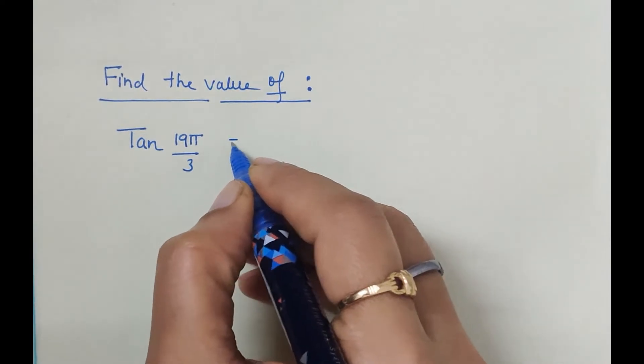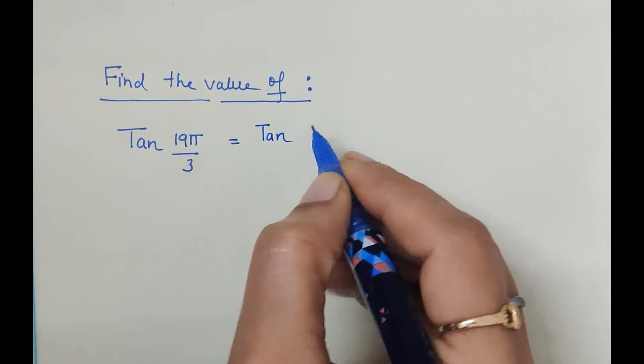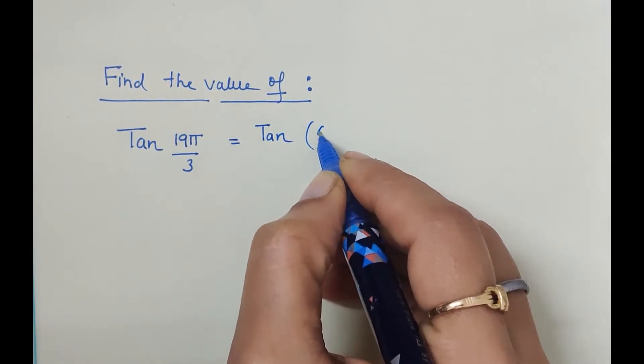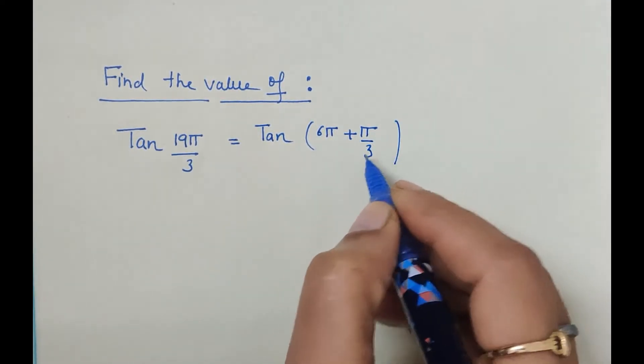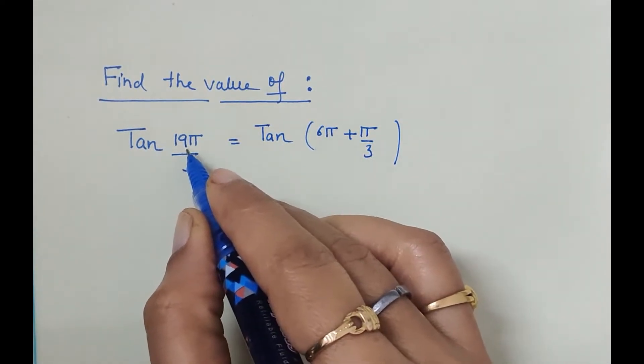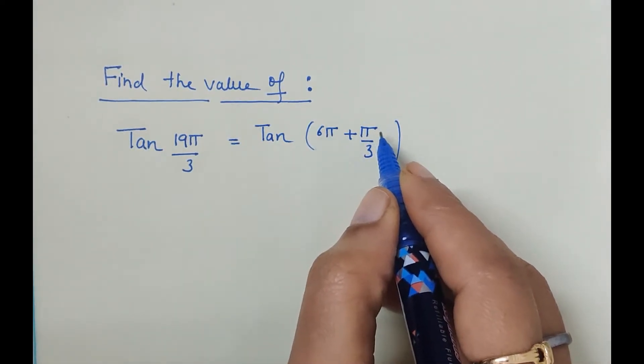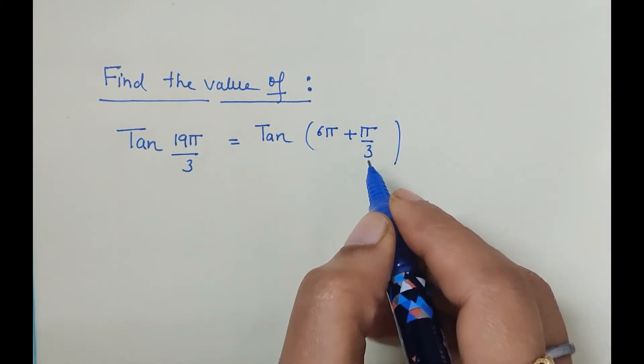We can write this as tan of 6π plus π by 3 because when we check it we get 19π only: 3 times 6 are 18π plus π by 3 is 19π by 3.